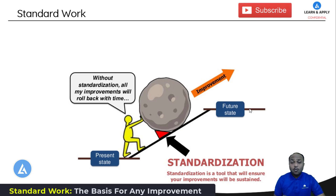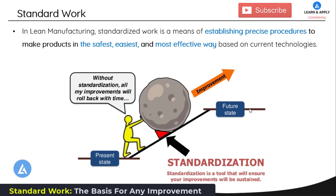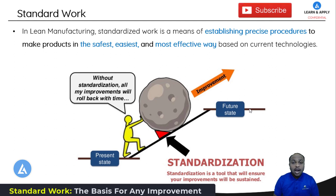In lean manufacturing, standardized work is a means of establishing precise procedures to make products in the safest, easiest, and most effective way based on current technologies. The phrase 'current technologies' is used because over time technologies evolve, and we need to improve our standards depending on technological development. In other words, standard work is a continuous practice. We need to maintain our improvements and at the same time seek another set of improvements.